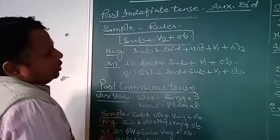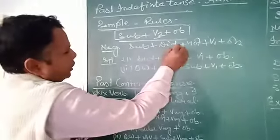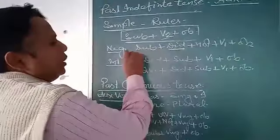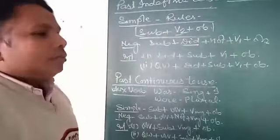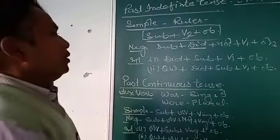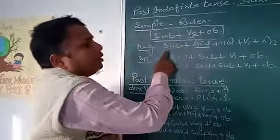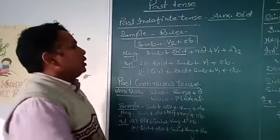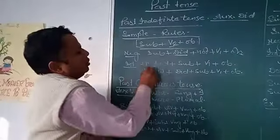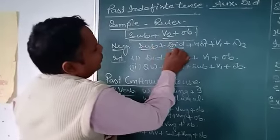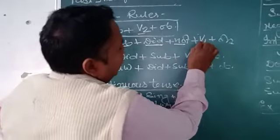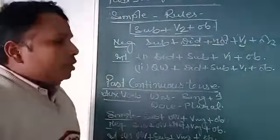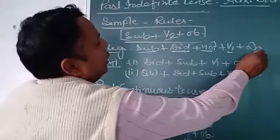If the sentence is negative, you will find the auxiliary verb 'did.' When you see 'did' in any sentence, you can write without hesitation that this is past tense and it will be a negative sentence. If you want to change a sentence into negative, you write subject, then auxiliary verb 'did,' then 'not,' and when you apply the auxiliary verb you write the verb base form, then object.